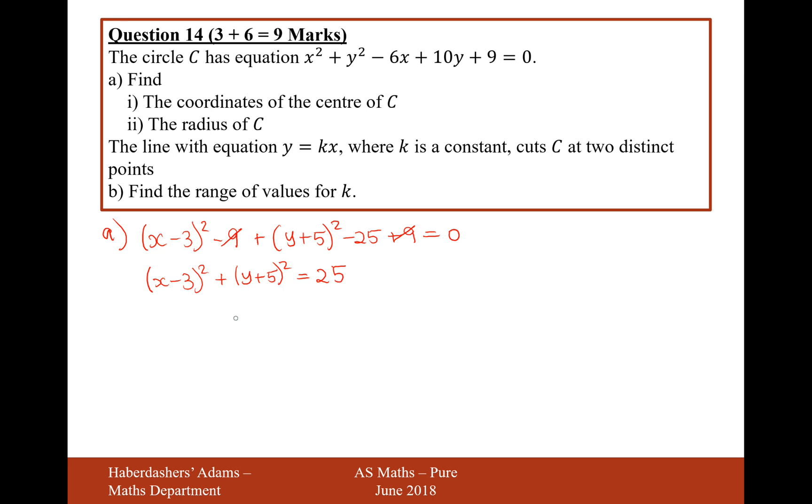From this we can pull out the centre of the circle. That's going to be the negative values of these two things inside the bracket, so 3 and minus 5, with a radius of 5. Remember, you square root this value on the end to get your radius. Therefore, it's 3 and minus 5.